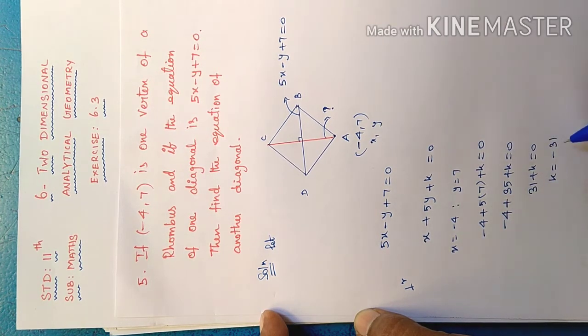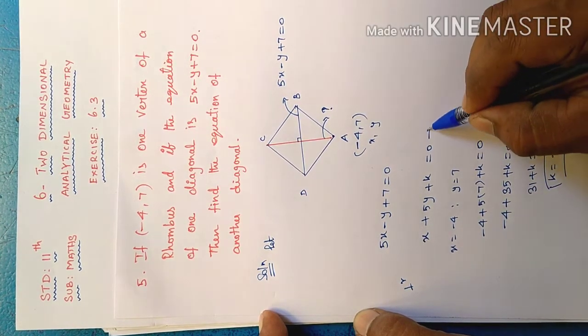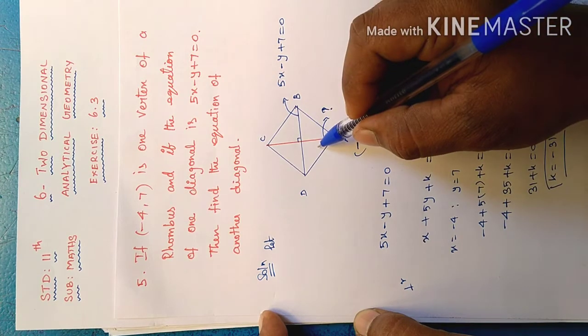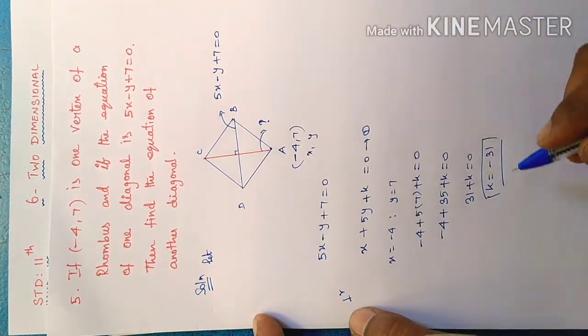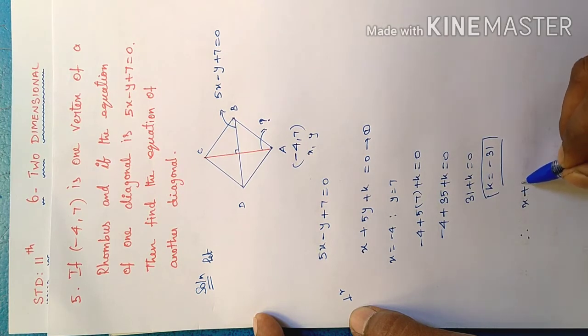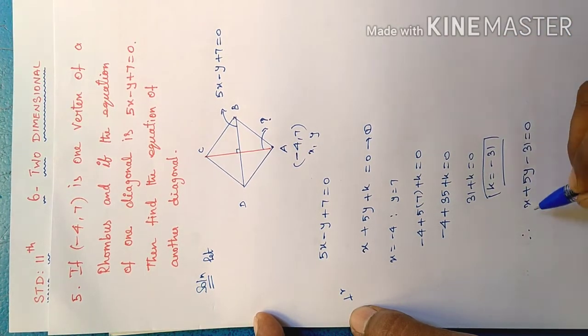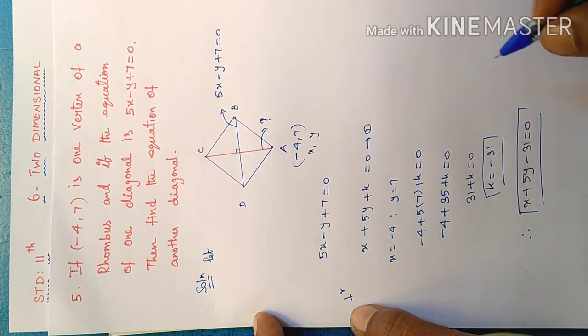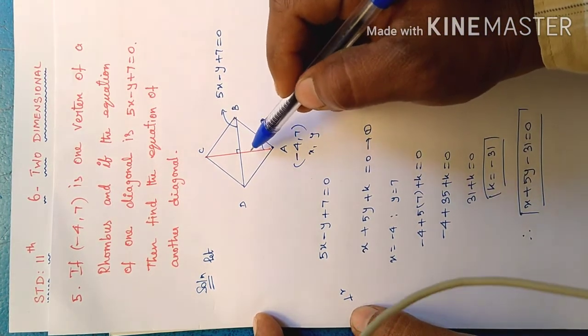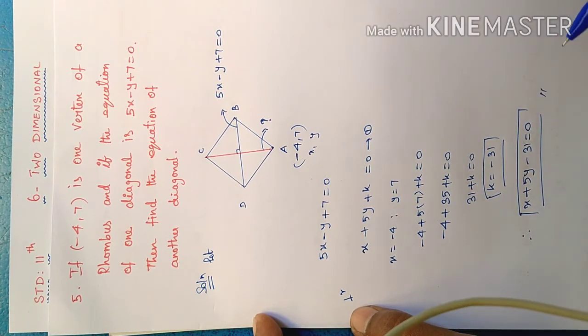Therefore k = -31. Apply the k value to find another diagonal equation. Therefore x + 5y - 31 = 0. This is the equation of another diagonal. Hence proved.